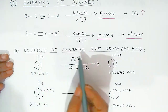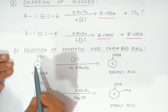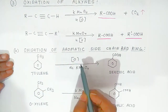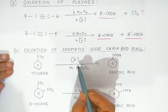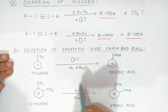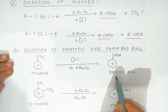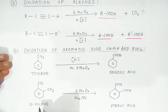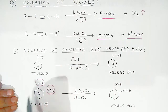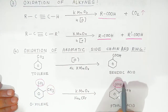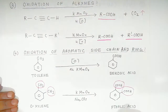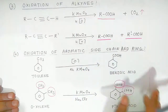Now, oxidation of aromatic side chain and ring. Here, toluene — where methyl is the side chain — when you oxidize the side chain using KMnO4, the methyl group is converted into carboxylic acid, and the whole compound toluene is converted into benzoic acid. Similarly, in ortho-xylene, the two methyl side chains are converted into carboxylic acid, forming phthalic acid — so the side chain is oxidized.